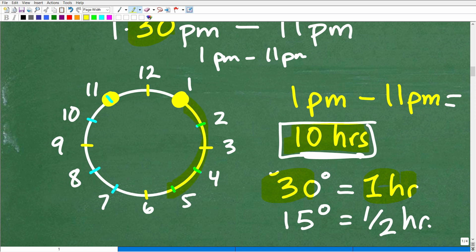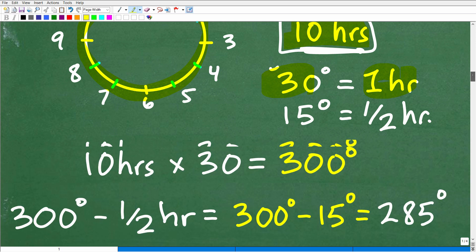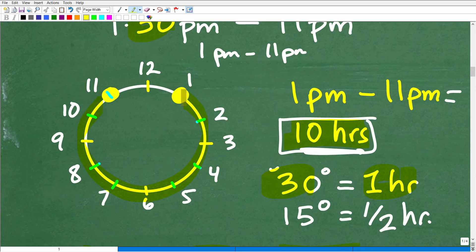Now, we kind of figured out that there are 30 degrees per 1 hour. So, if there's 10 hours between 1 and 11, how many degrees would that be? Well, let's go and figure that out. That's pretty straightforward, right? So, there's 10 hours between 1 PM and 11 PM. So, 10 times 30 is 300 degrees, right?